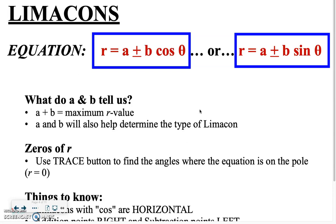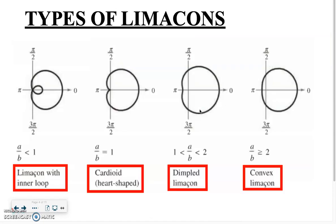The variables — we have a and b instead of a and n when working with rose curves. And yes, we have addition and subtraction in place here; yesterday with rose curves it was all about multiplication. Those are the big differences. It's no secret — you can see the four different types and what they're going to look like: an inner loop, a cardioid, a dimpled limaçon, and a convex limaçon.